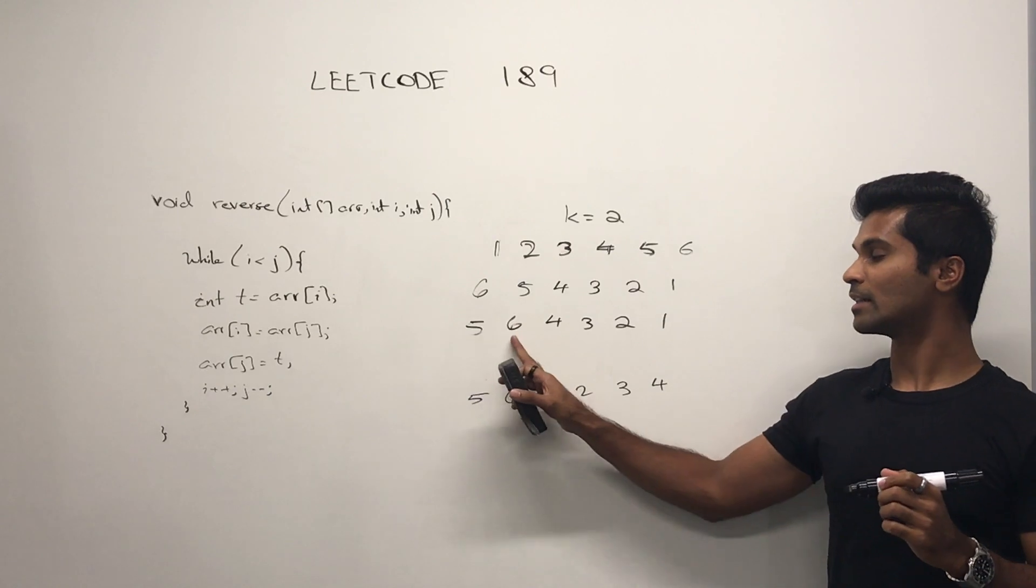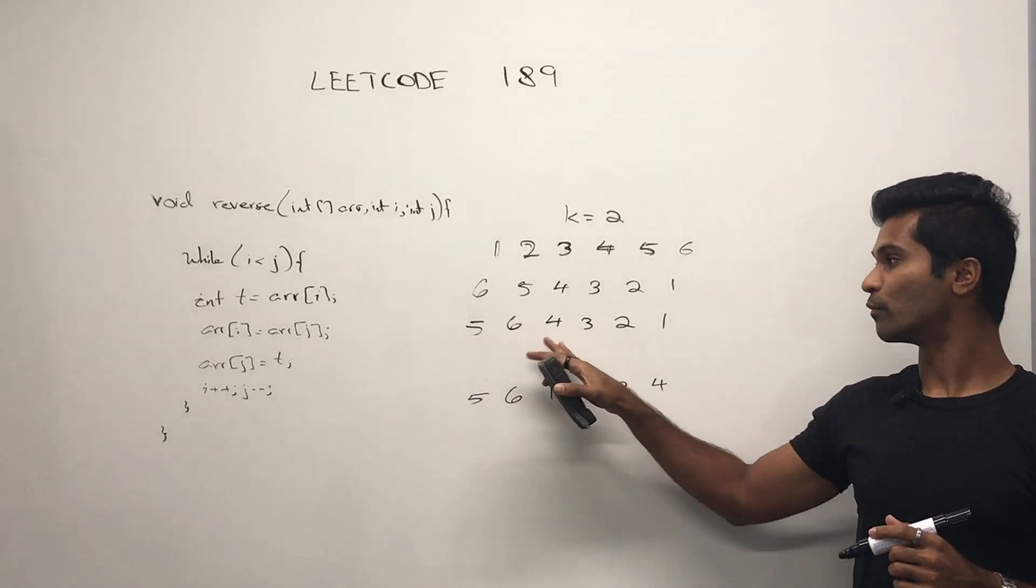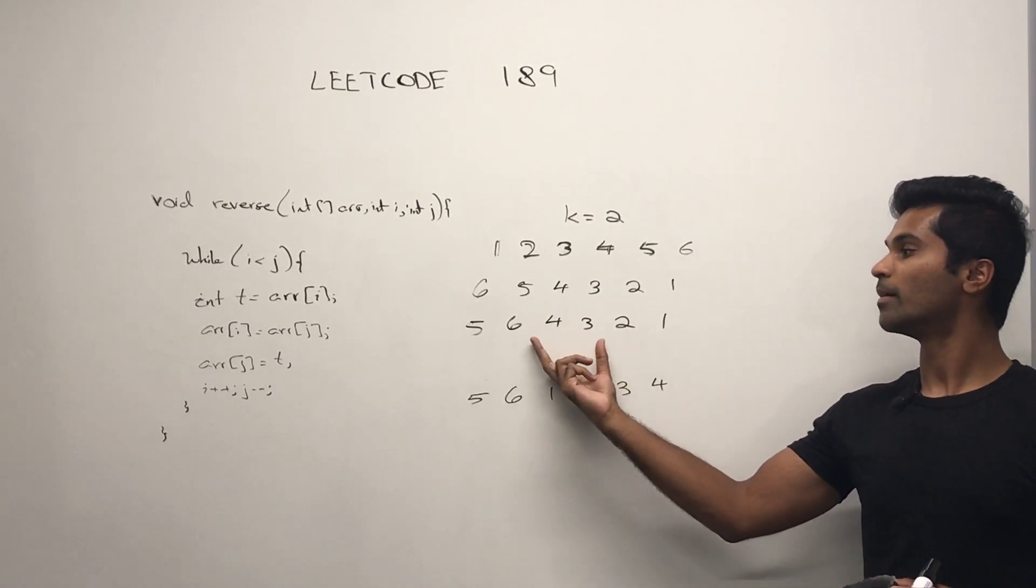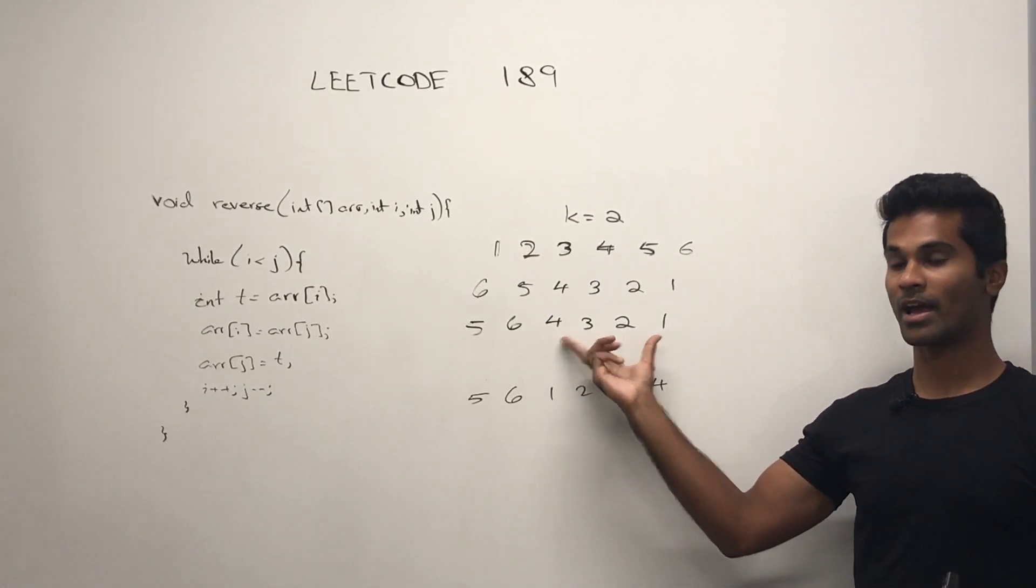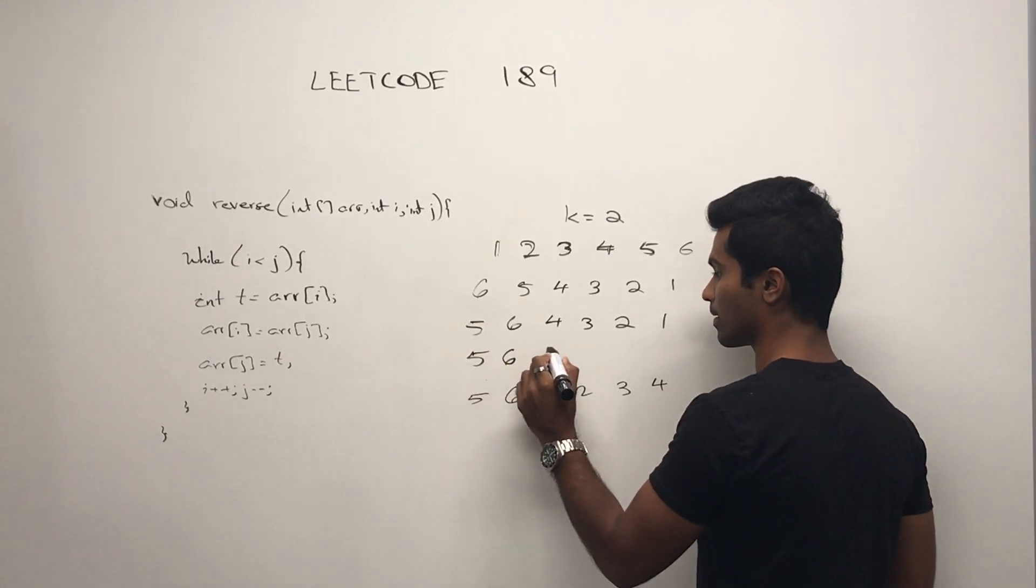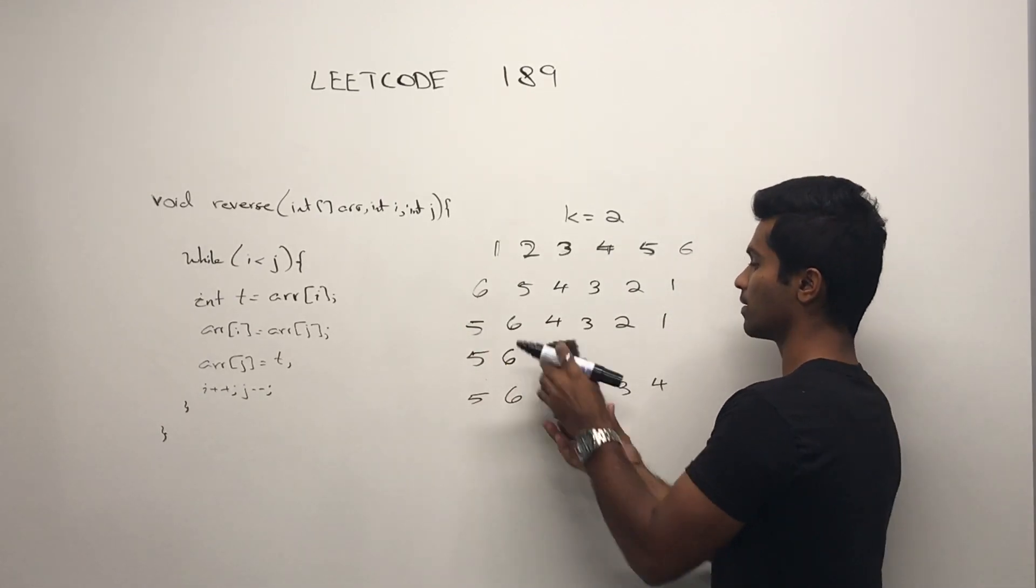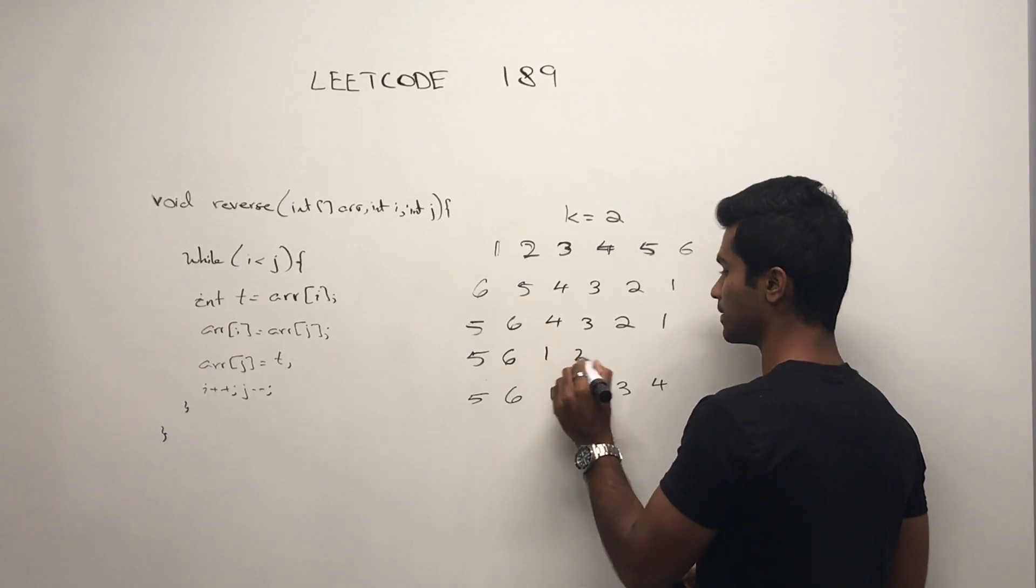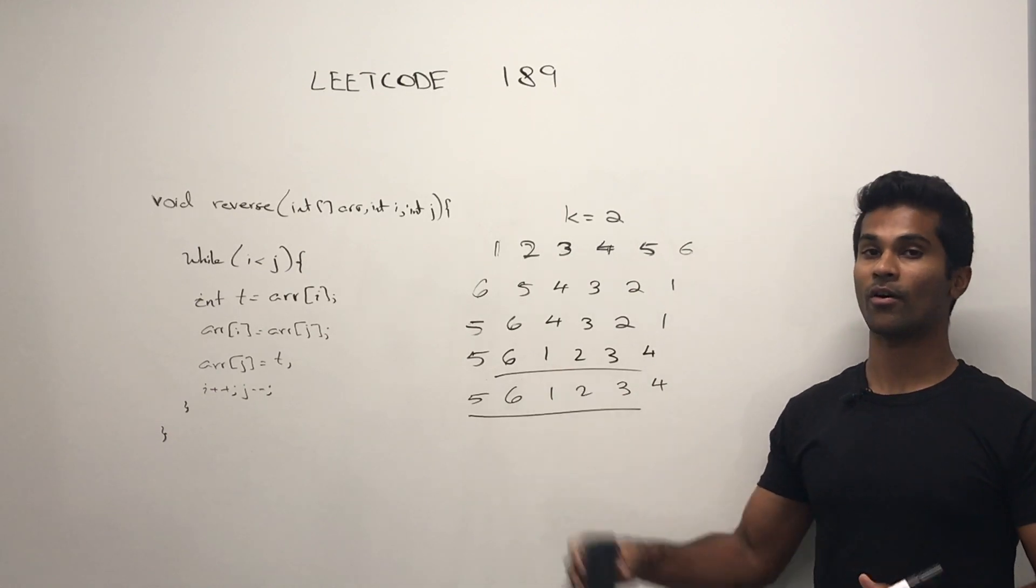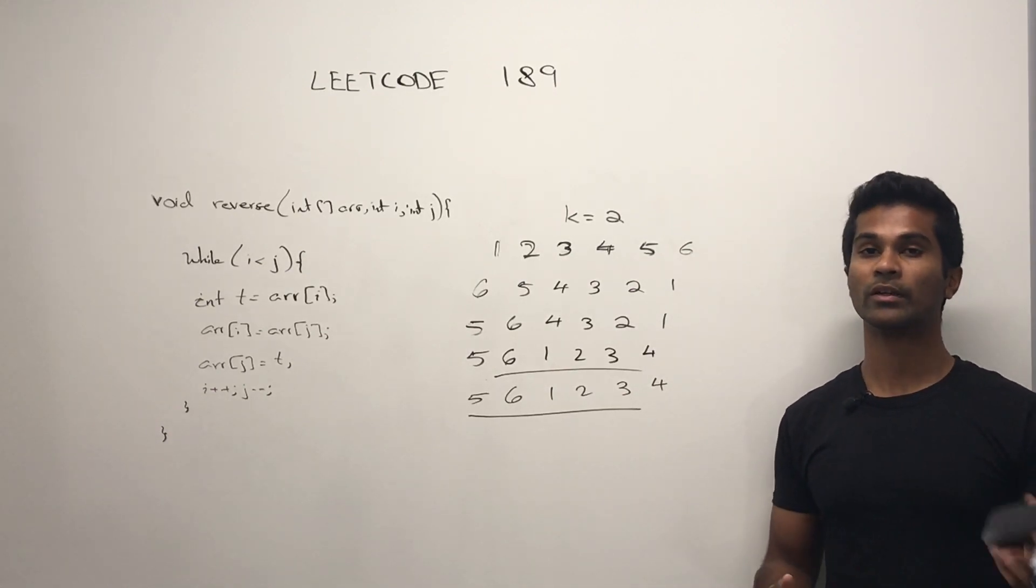So we have five and six, but we still have the four, three, two, one, which is slightly out of order. But very conveniently, all we have to do is rotate this subarray and we'll get the output that we need. So now we see that both of these are equal. Now let's quickly look at the code.